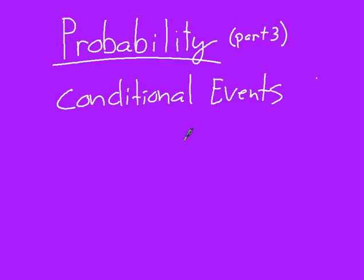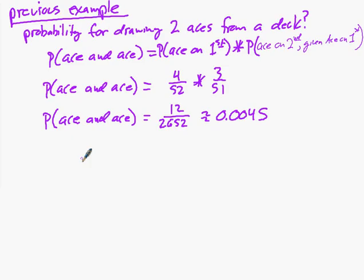I'm going to review one of the examples from before, which is the probability for drawing two aces from a deck. That's the probability of ace and ace — both events have to happen. We have the ace on the first draw, which would be four out of 52, times — because this is the 'and' and uses the multiplication rule — the probability of getting an ace on the second, given that the first one was also an ace. There are three aces left out of 51 cards, and you get your 0.0045 probability.